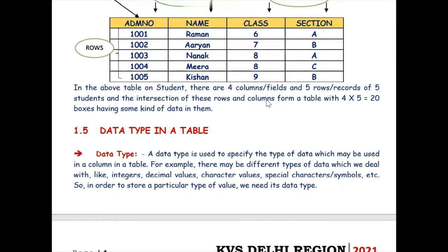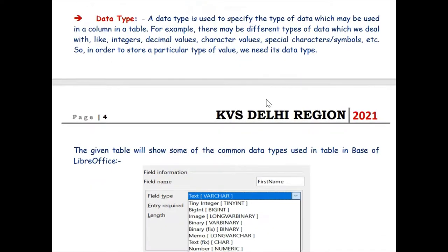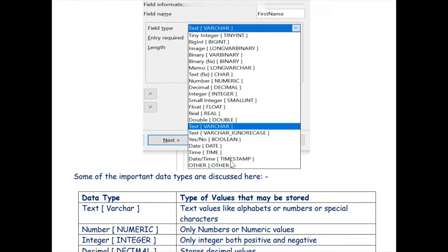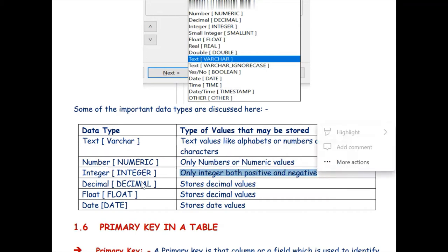In LibreOffice Base, there are a variety of data types. As you can see on the screen, we have: VARCHAR, which stores text values including alphabets, numbers, and special characters; Numeric, which stores only numeric values; Integer, which stores only integers — both positive and negative; Decimal, which stores decimal values; and Float, which stores decimal values with a higher range.